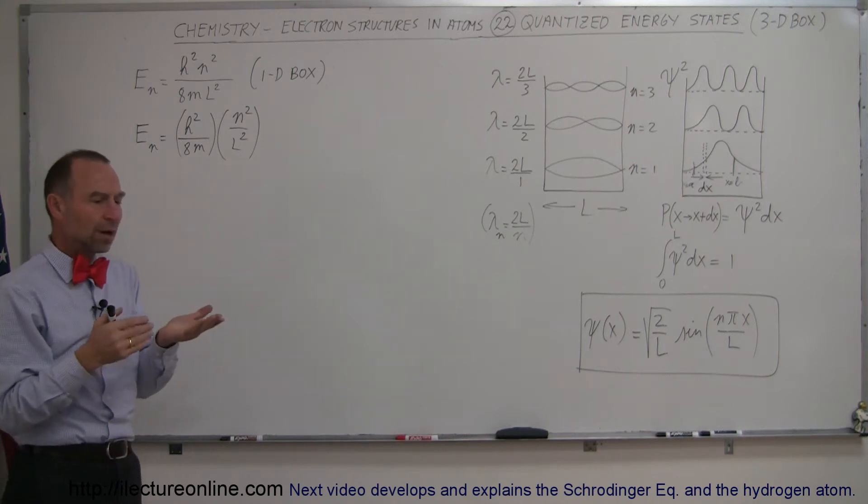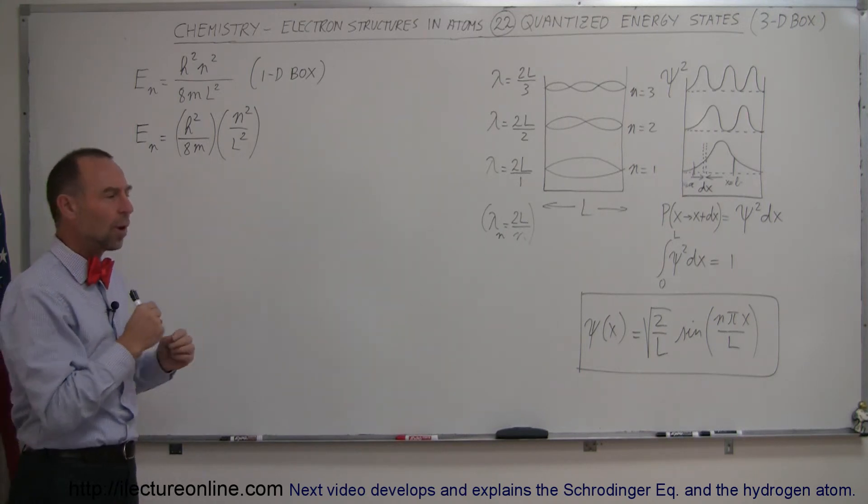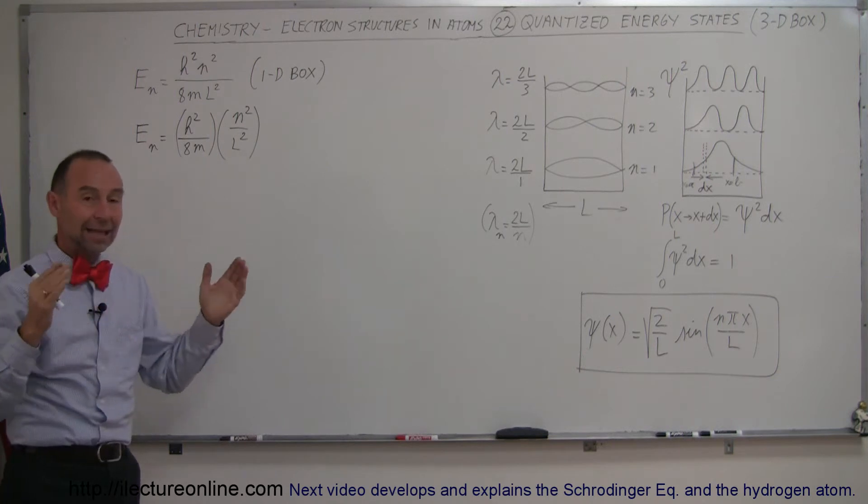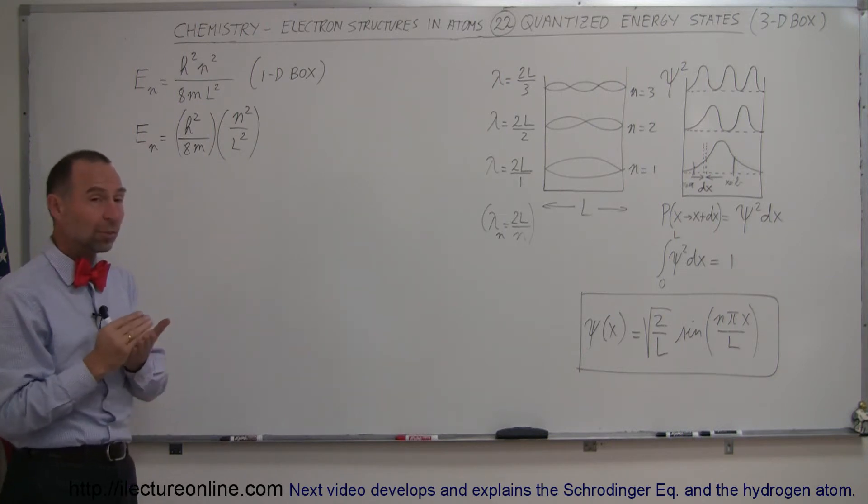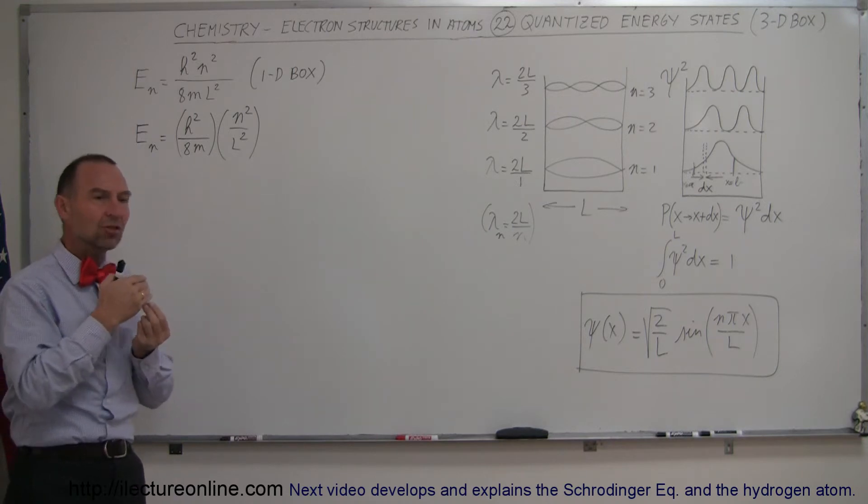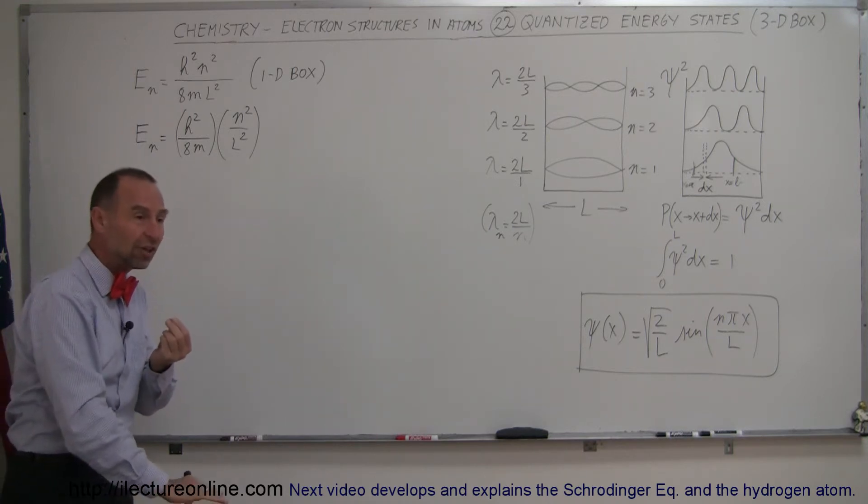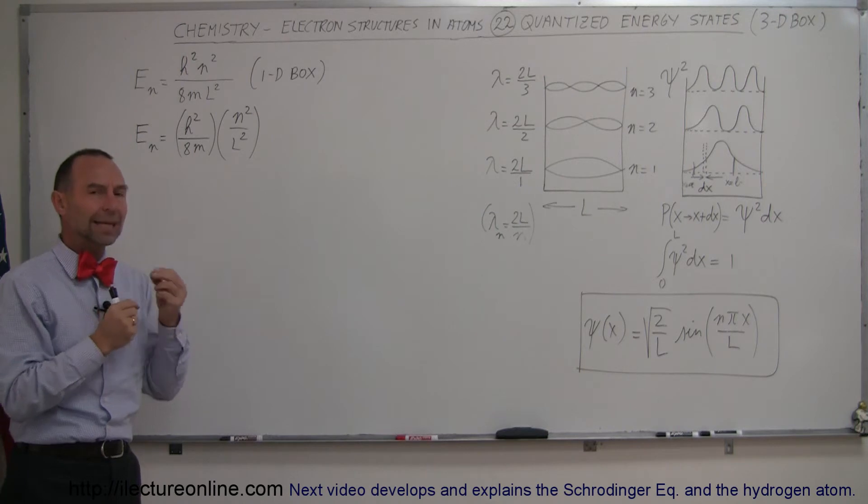So in a three-dimensional box, we have dimensions X, Y, and Z. So how would an electron act in a three-dimensional box rather than a one-dimensional box? Well, in each dimension, the electron could have an energy state. It could be at the lowest energy state, or it could be in a higher energy state. So it could be independent in the energy state in the three dimensions.